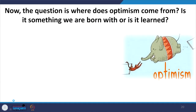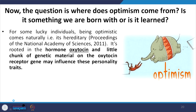The question is: where does optimism come from? Why do people believe 'I am better than you'? Is it something we are born with, or is it learned from the environment? For some lucky individuals, being optimistic comes naturally — the Proceedings of the National Academy of Science (2011) talks about it being rooted in the hormone oxytocin, which is hereditary, and a small chunk of genetic material on the oxytocin receptor gene may influence these personality traits.